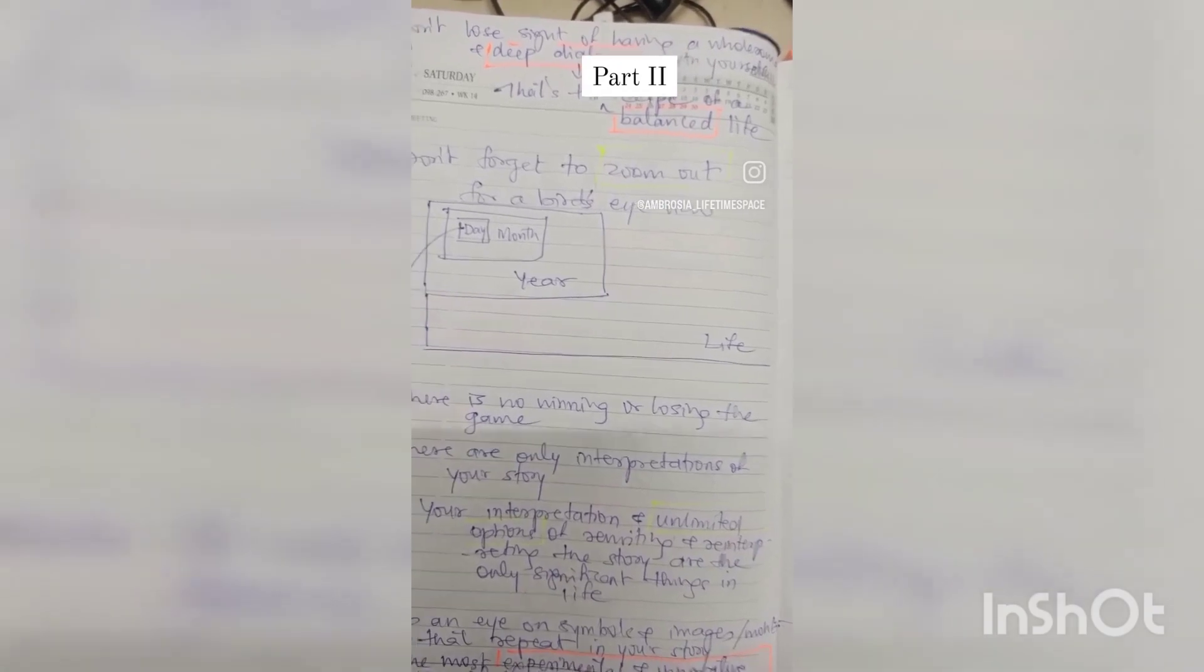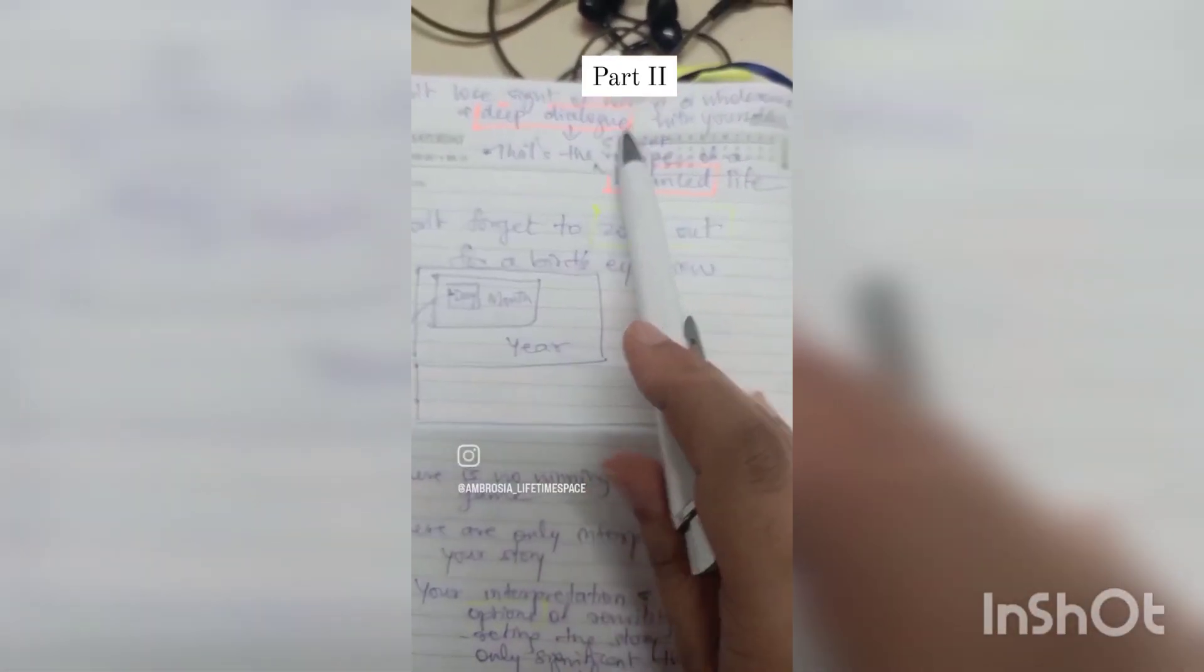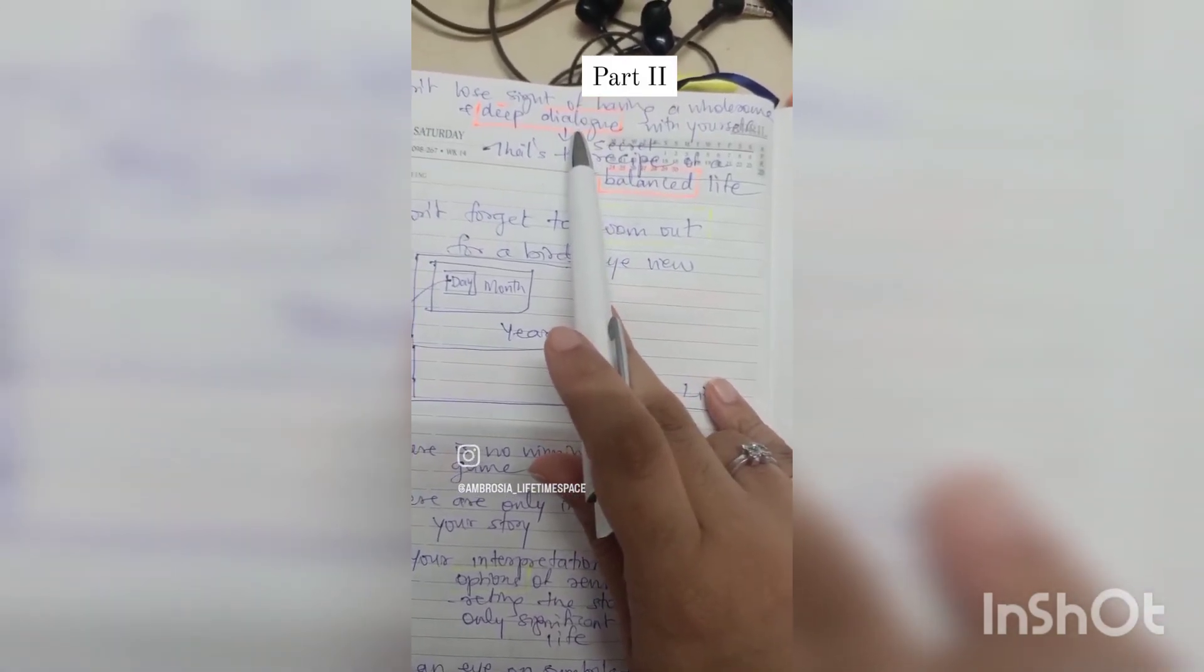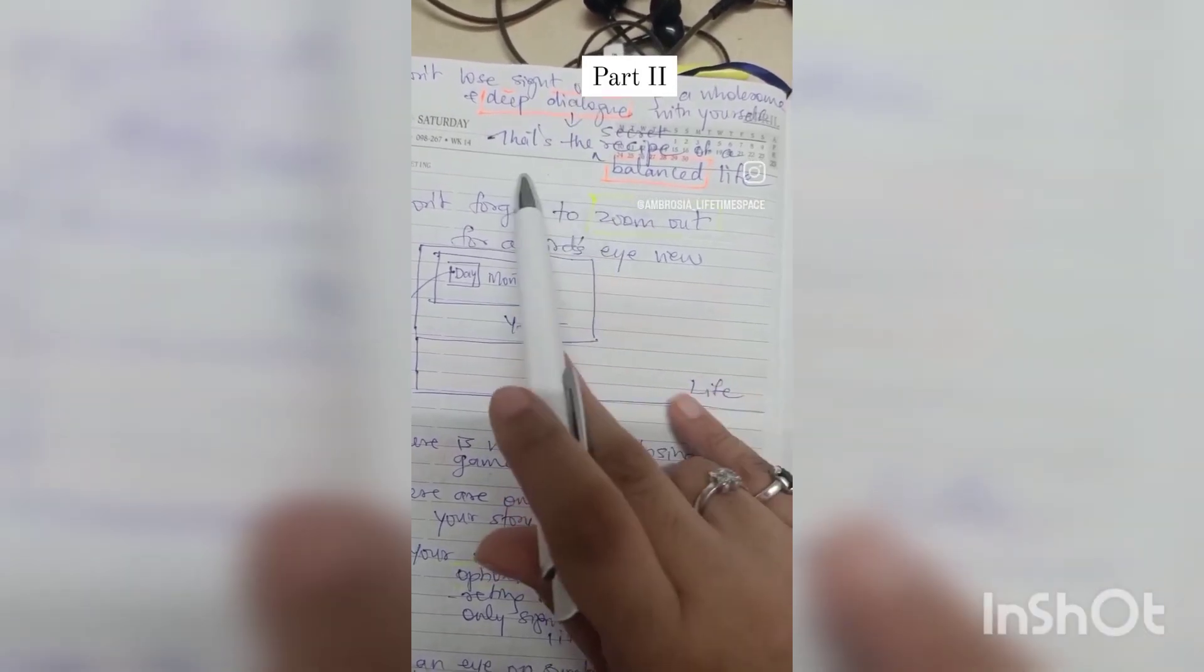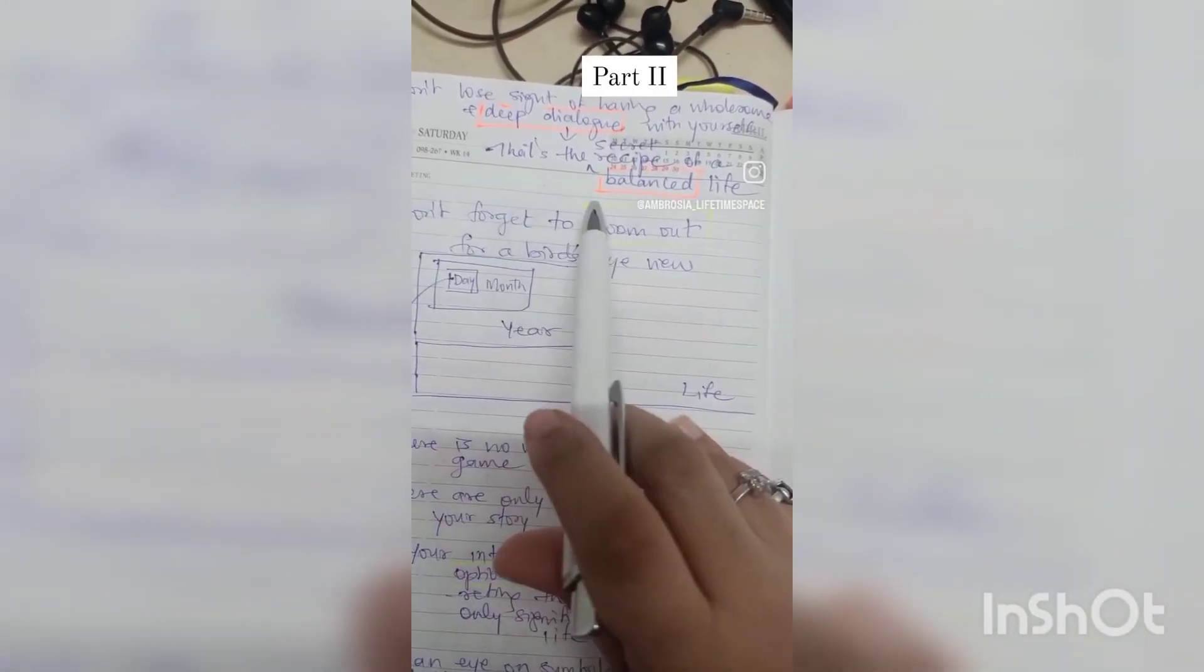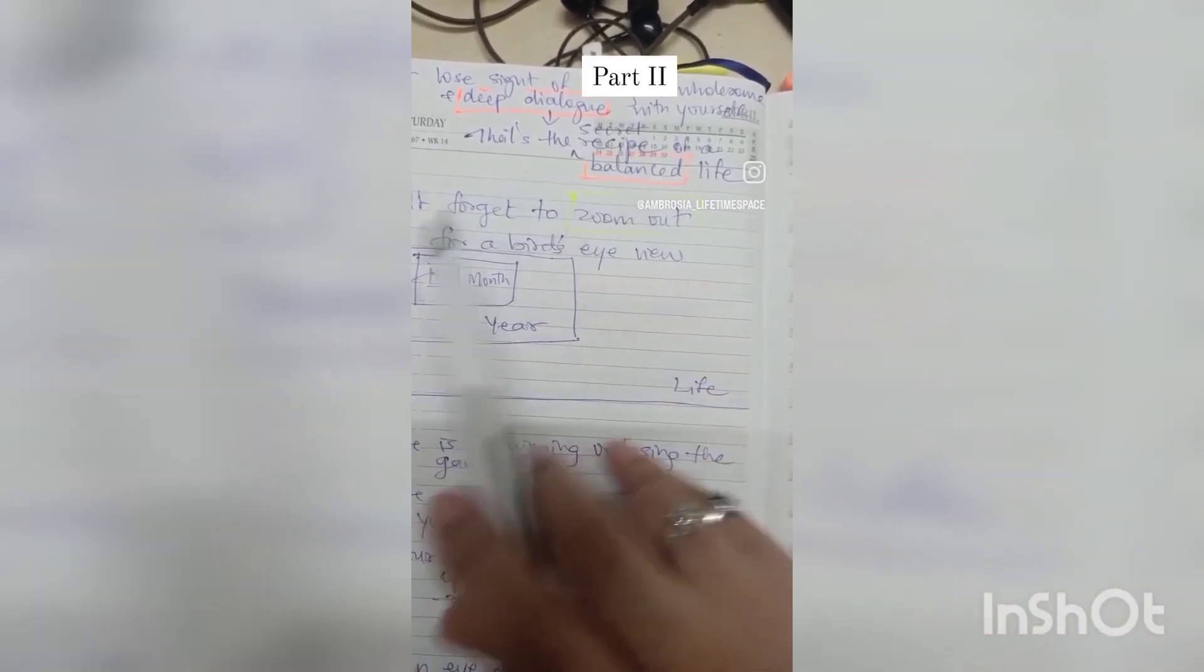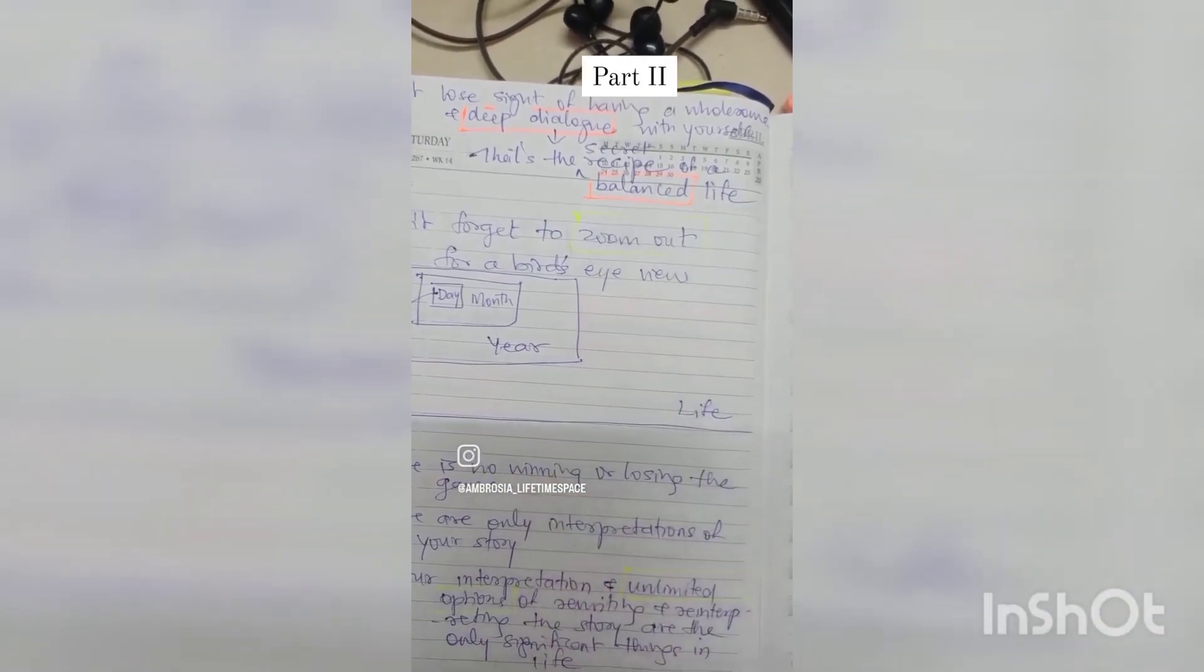Make it experimental, make it innovative, and then the biggest use of language is in being in deep dialogue with yourself. Those are the most important dialogues in your book and that is the secret recipe, literary interpretation of your life to lead a balanced life. To be continued...